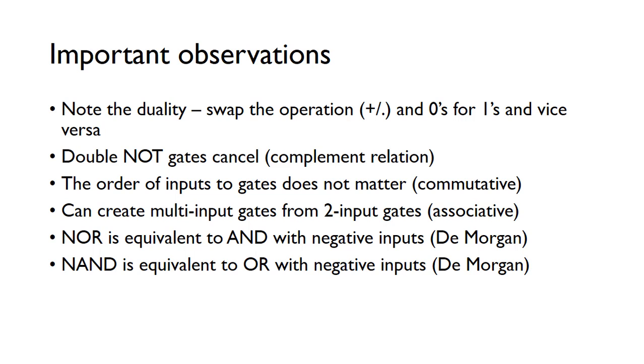A NOR gate is equivalent to an AND gate with negative inputs, that comes from De Morgan's laws. And again, NAND is equivalent to a NOR gate with negative inputs, which also comes from one of De Morgan's laws. Very useful rules.